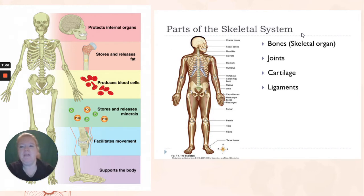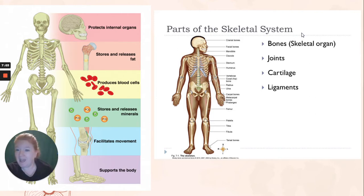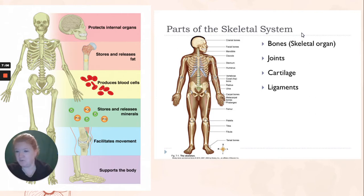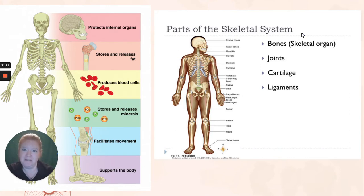And then some functions of the skeleton. A reminder that the skeleton is not just bones — it's cartilage, it's joints, it's ligaments, it's how all those bones are held together. So your skeleton protects, it stores fat, it produces blood cells, it stores minerals, it helps with movement, it supports shape. It has a lot of functions.